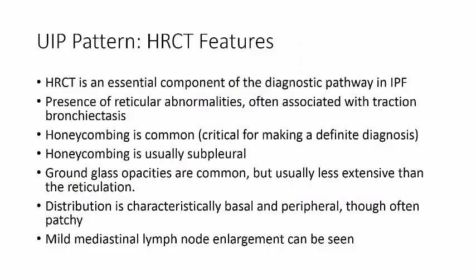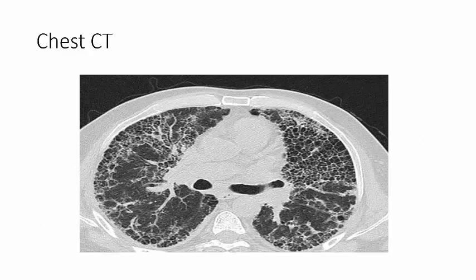The UIP pattern on HRCT is essential when diagnosing IPF. The presence of reticular abnormalities is often associated with traction bronchiectasis. You also see honeycombing, which is critical for a definitive diagnosis and is usually subpleural. You may also see mild ground-glass opacity, though not as prominent as the reticulation. The distribution tends to be basal and peripheral, and sometimes patchy. Mediastinal adenopathy can be seen, usually less than 1.2 cm per ATS guidelines.